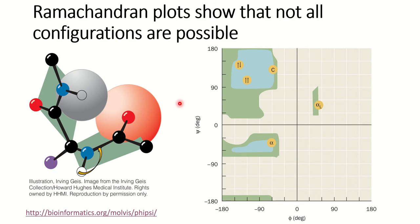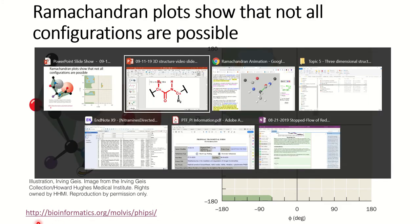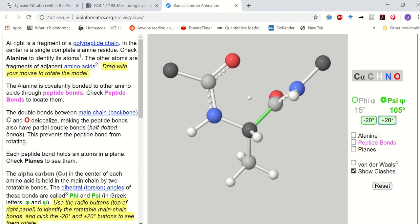That causes a lot of constraints on the overall three-dimensional structure. We're going to look more at how that's possible by looking at this link. So we're going to take a look at just a dipeptide.